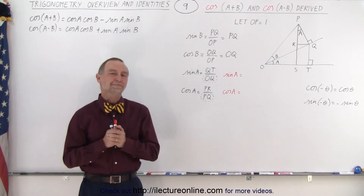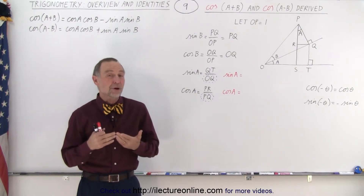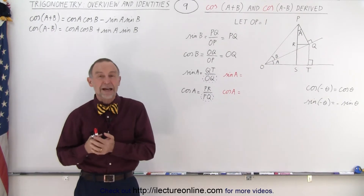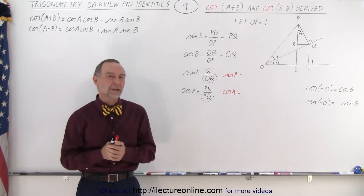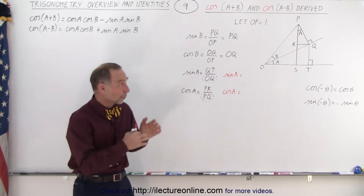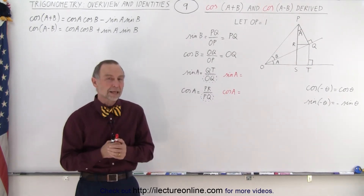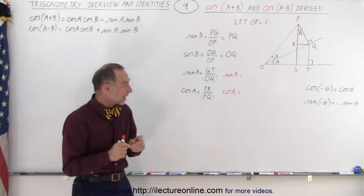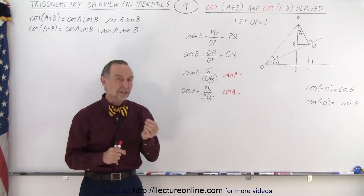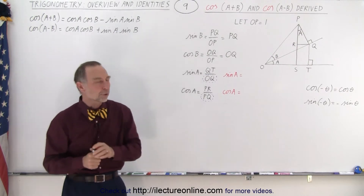Welcome to iLectroOnline. On the previous video, we showed you how we determined the sum and difference of angles for the sine function. Now we're going to do the same for the cosine function. We're going to use the exact same graph as we had before, and we're going to define the sine of A and the cosine of A differently this time compared to the last time, and we'll show you why.